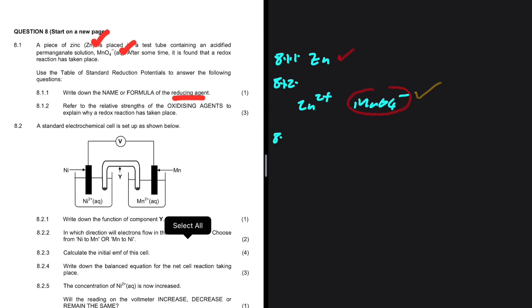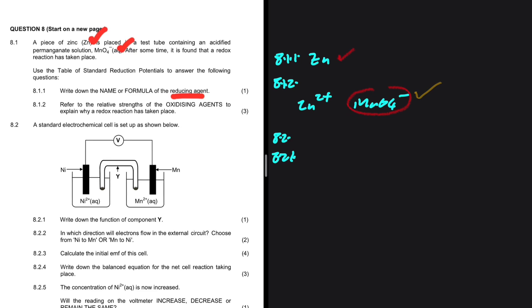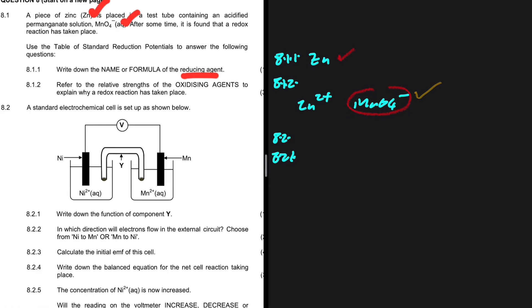Let's take a look at 8.2 and 8.2.1. We have a standard electrochemical cell, and the first question is to write the function of component Y. Component Y is a salt bridge. There's a few things that a salt bridge does for an electrochemical cell. One, it completes the circuit. It also provides a path for movement of ions. That is some of the functions of component Y, a salt bridge.